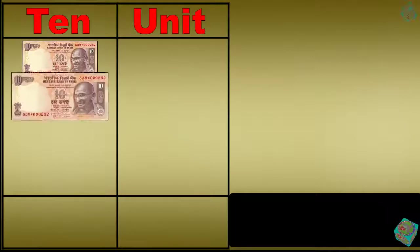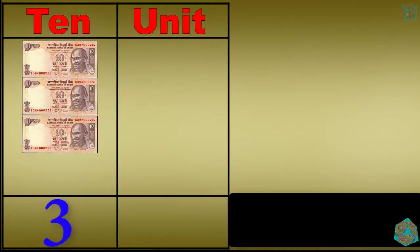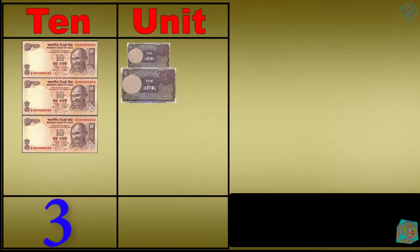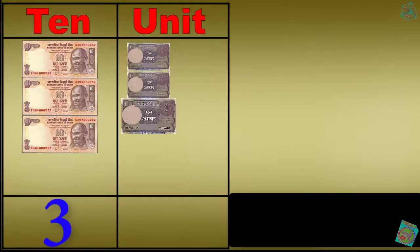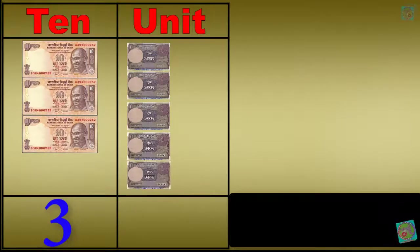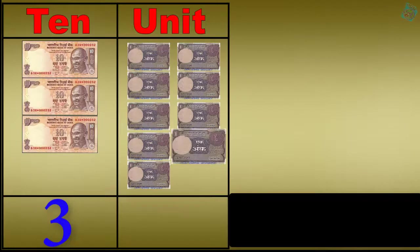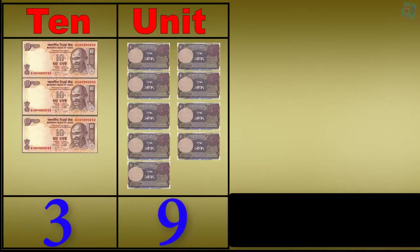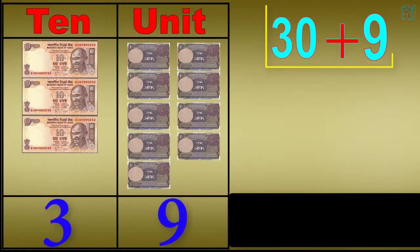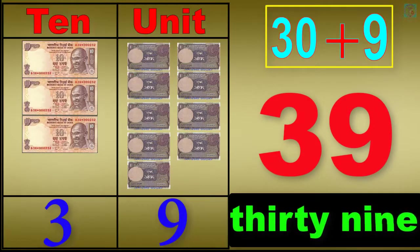1 ten, 2 tens, 3 tens, 3 tens 1 unit, 3 tens 2 units, 3 tens 3 units, 3 tens 4 units, 3 tens 5 units, 3 tens 6 units, 3 tens 7 units, 3 tens 8 units, 3 tens 9 units. 30 plus 9 equals 39. T-H-I-R-T-Y-N-I-N-E, 39.